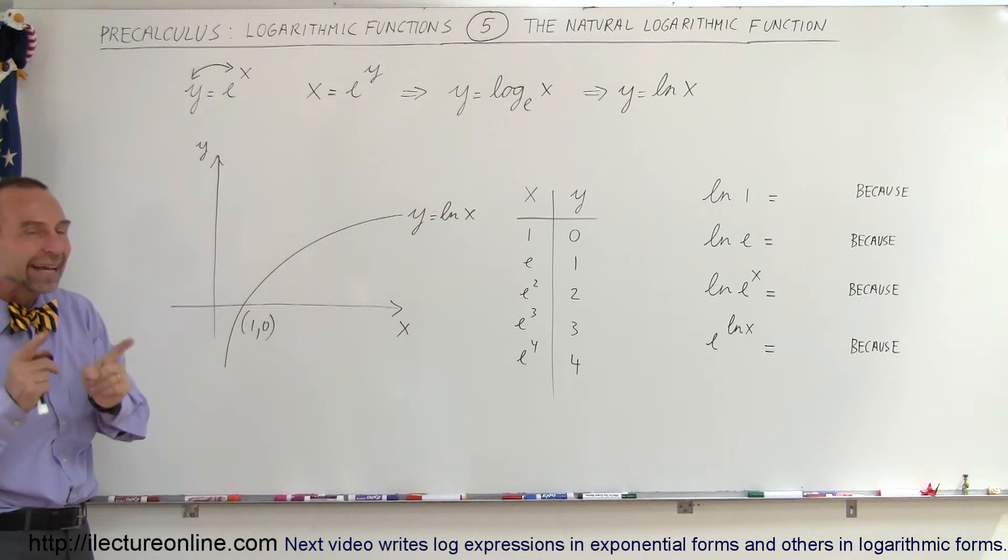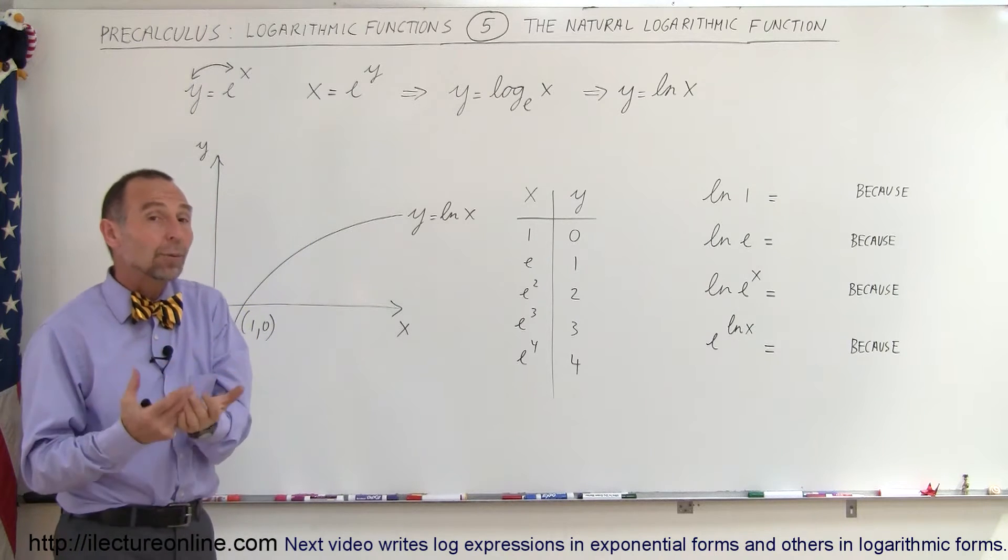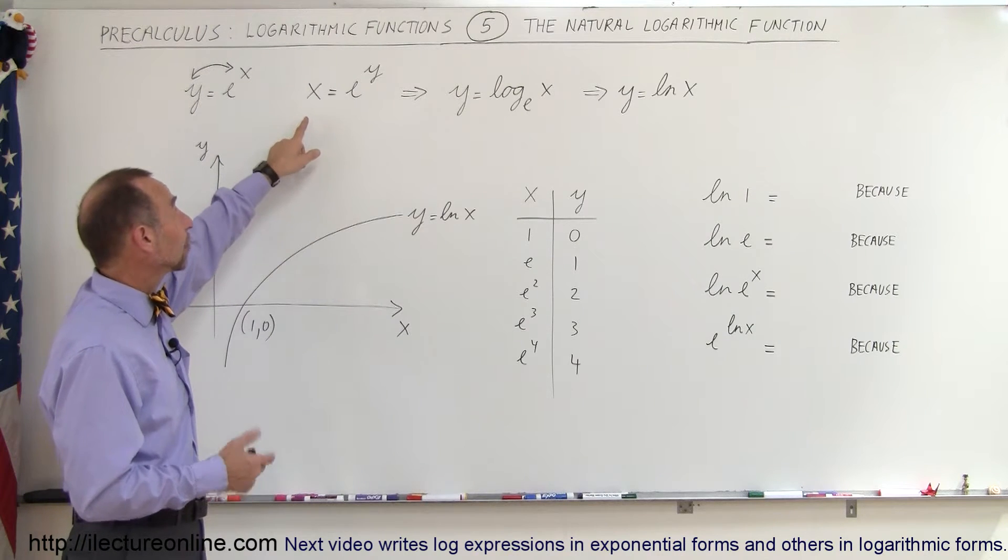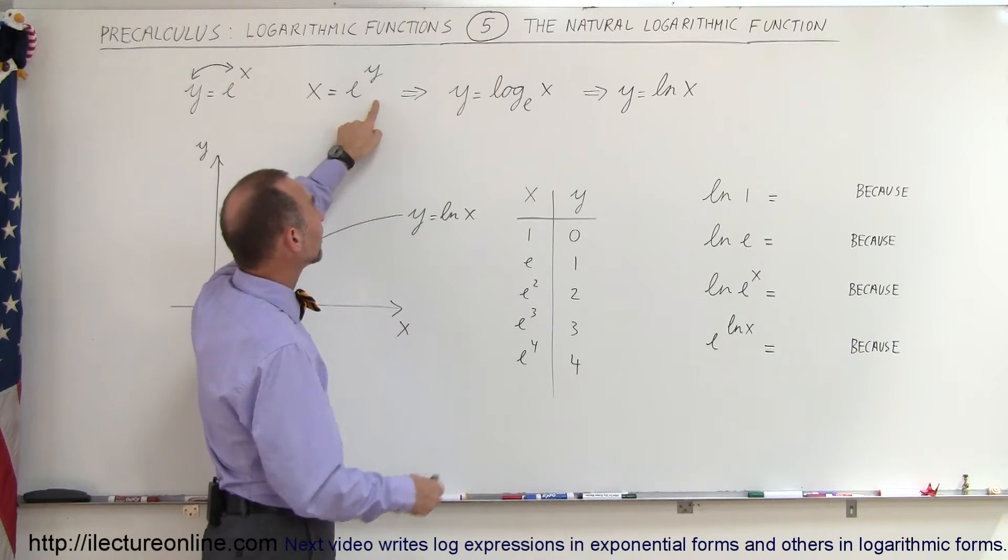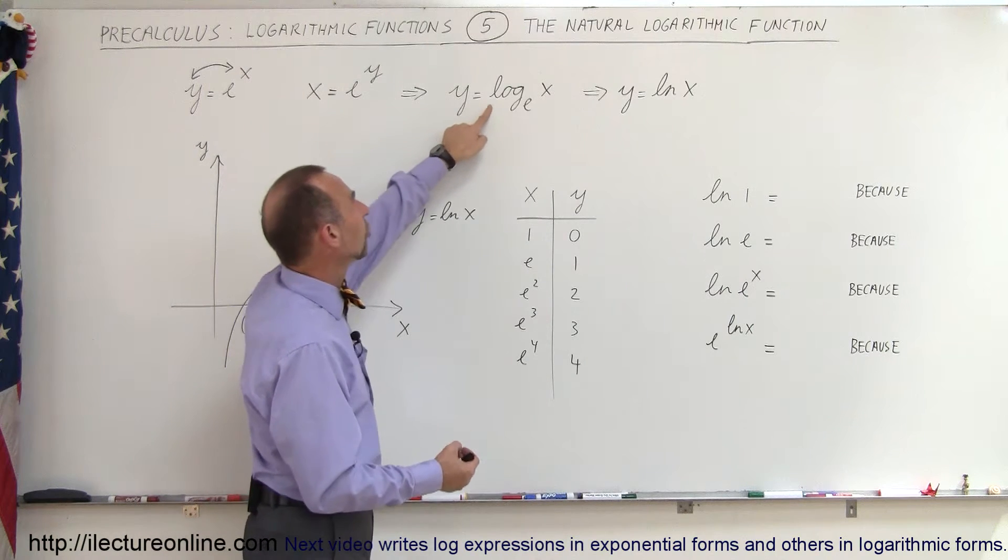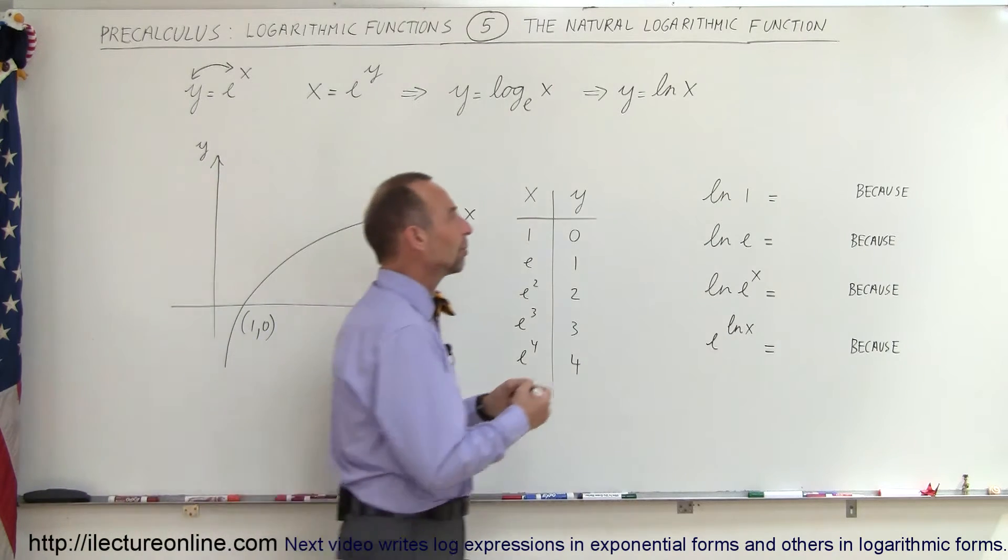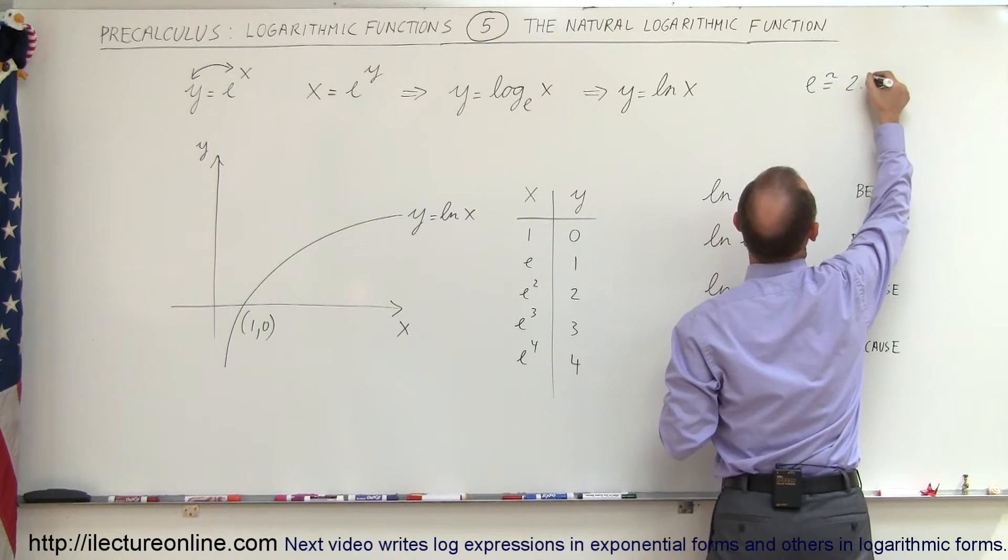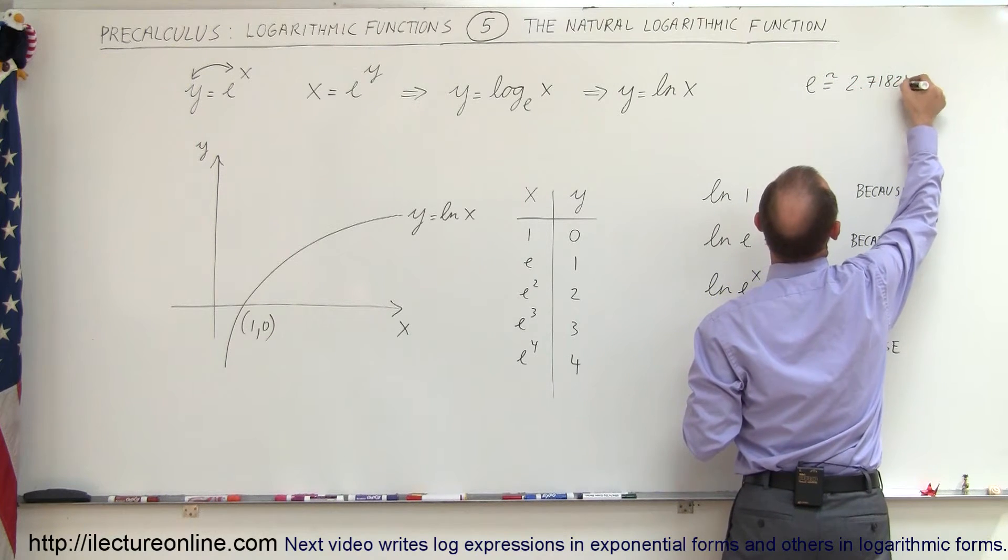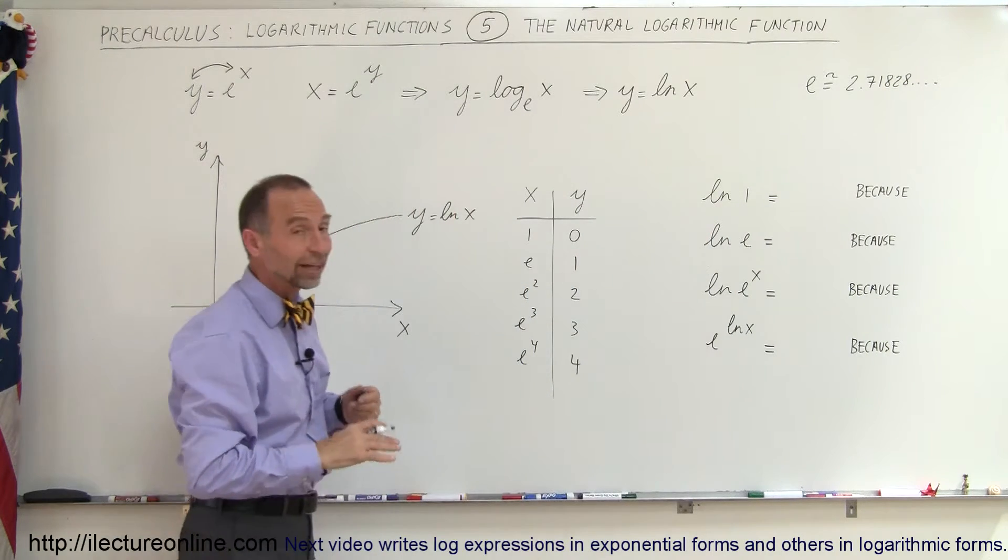And so if we replace the x and the y and write as x equals e to the y, and then we want to take that function and write it like y equals something, it turns out that x equals e to the y is exactly the same as y equals log to the base e of x. Remember that e is again that natural number and it's approximately equal to 2.71828 and so forth, and it's a non-repeating decimal just like the number pi.